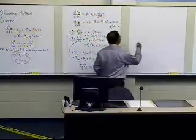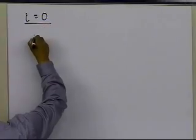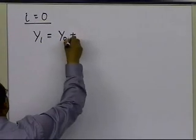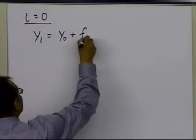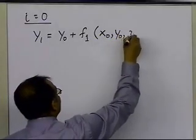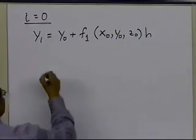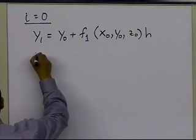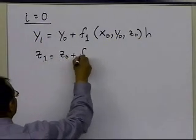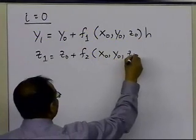Choosing i equal to 0, we get y1 equal to y0 plus the value of the function f1 at (x0, y0, z0) times h, and z1 equal to z0 plus the value of the function f2 at (x0, y0, z0) times h.